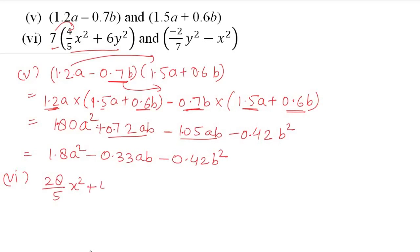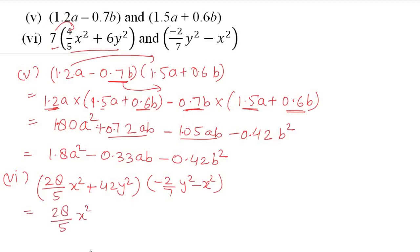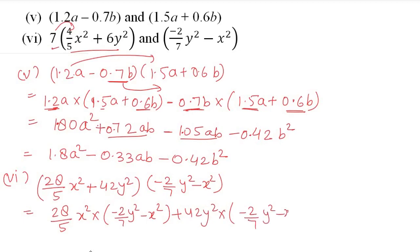Now we multiply this result by (-2/7 y² - x²). So: (28/5 x²)(-2/7 y² - x²) plus (42y²)(-2/7 y² - x²).